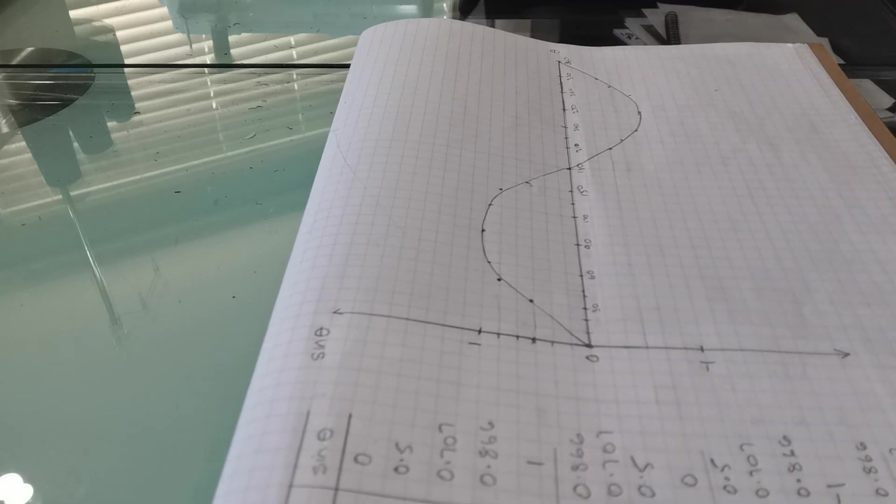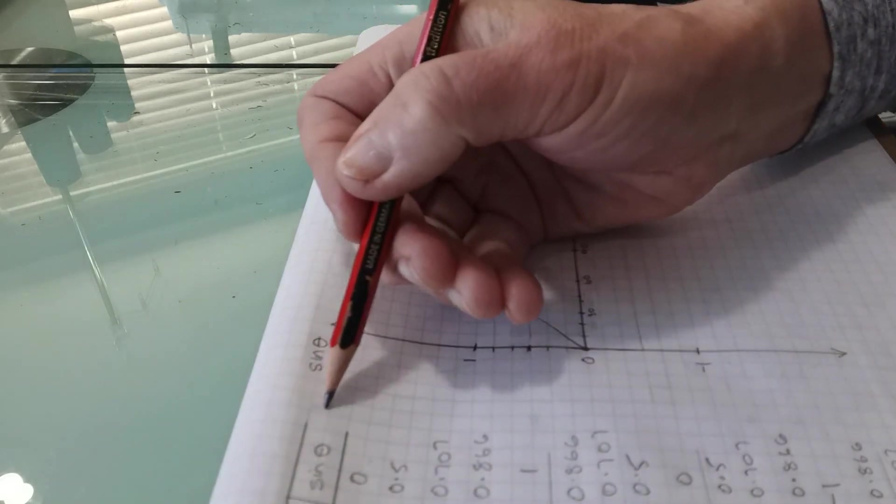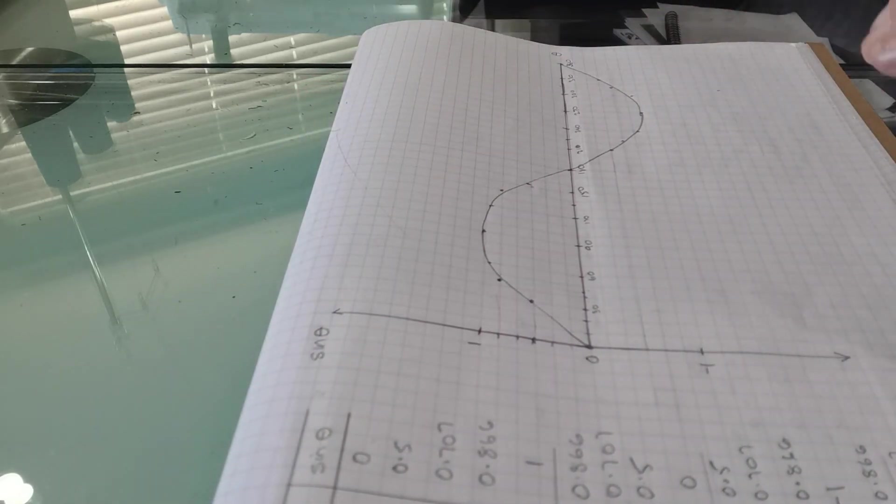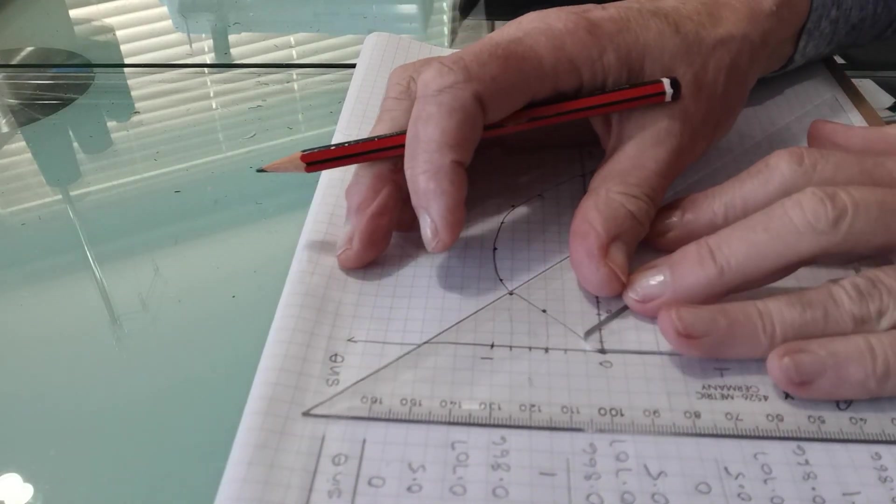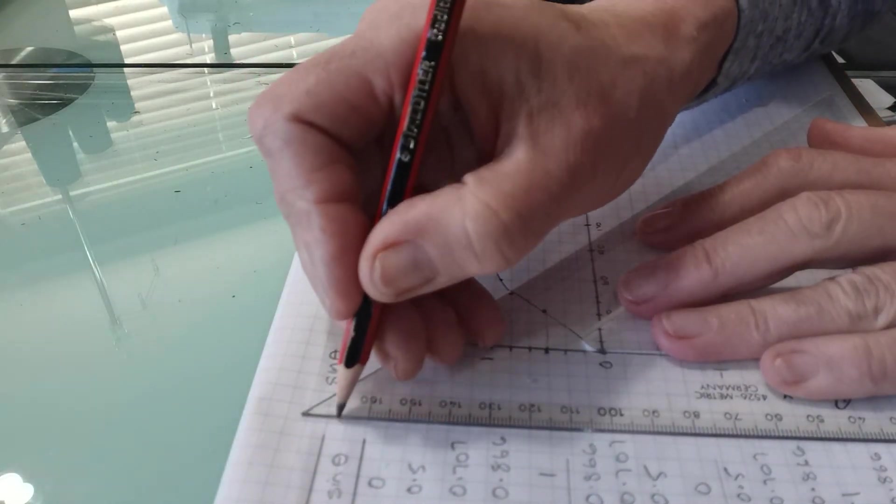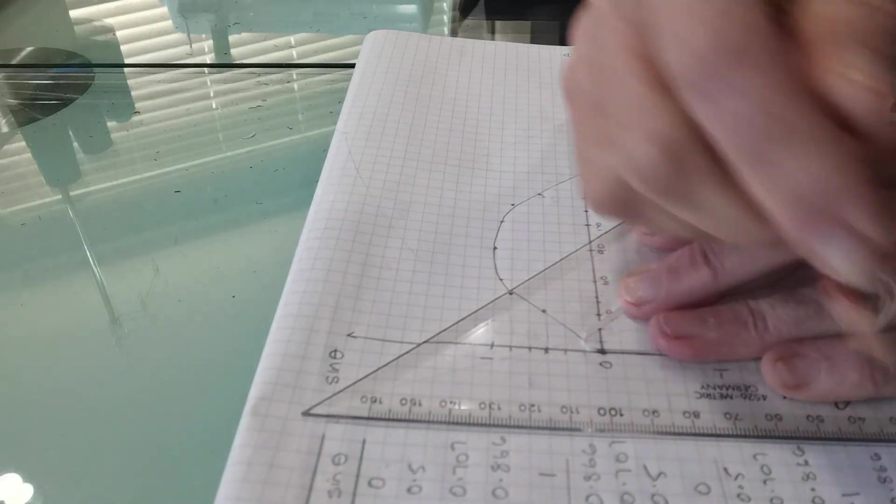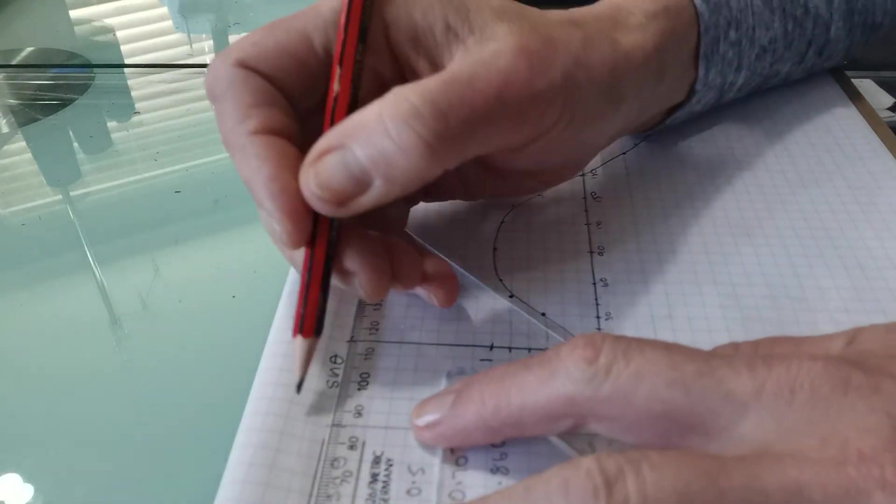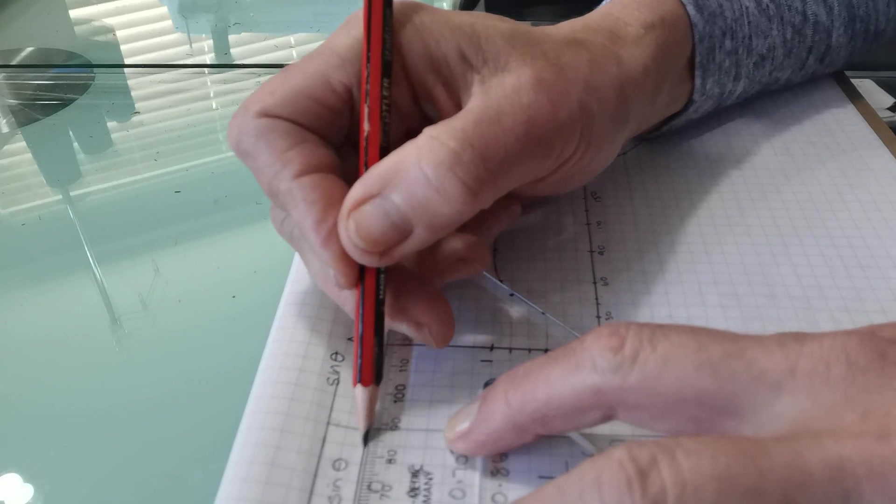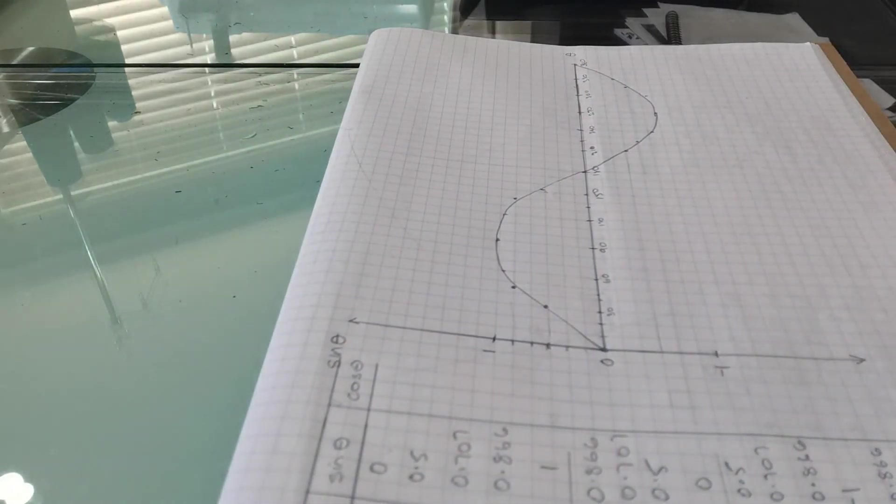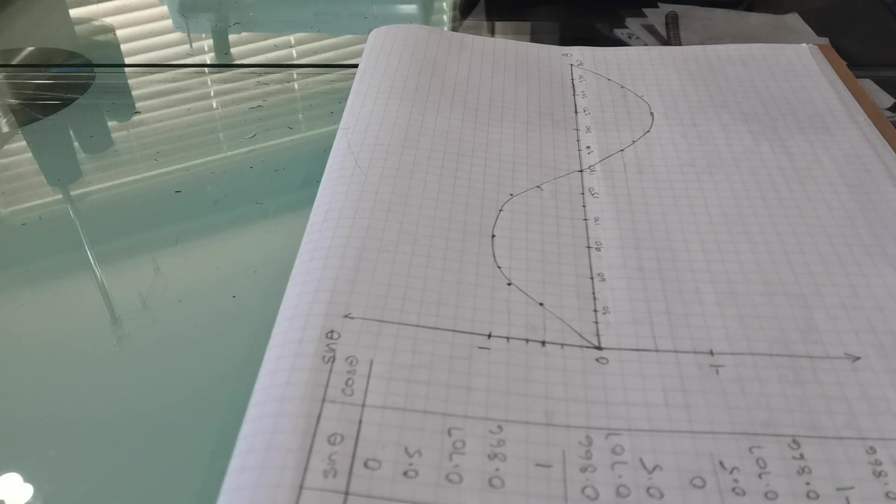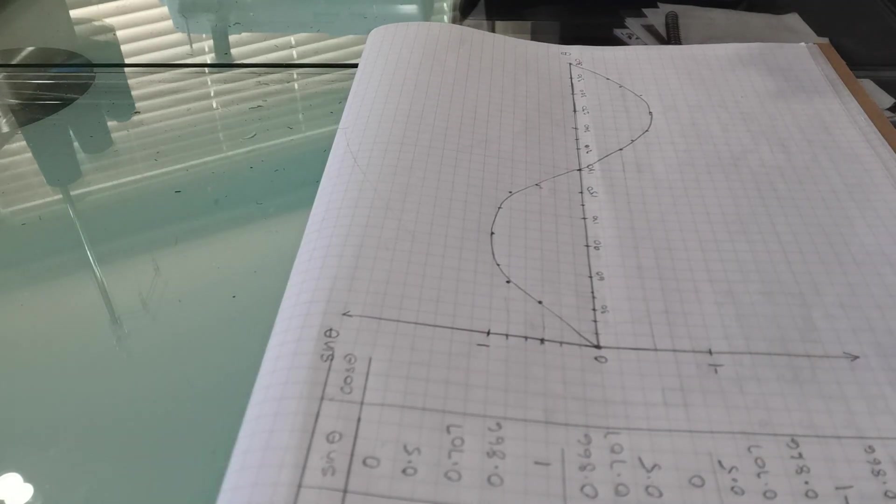So you can do the same with the cosine now on the same set of axes, maybe putting another line down here and finding the cosine of these and using a different color pencil or a different color pen to calculate and draw the cosine of theta on the same set of axes. So thanks for your attention. Bye for now.